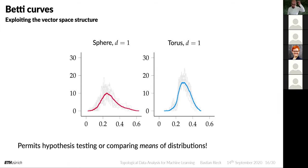You can exploit the vector space structure of Betti curves by calculating a mean Betti curve over different samples from a dataset. For example, taking 100 samples from a sphere dataset and graphing persistent homology features in dimension one calculated using the Betti curve, and similarly for a torus. You get a mean representation that becomes progressively smoother because it's an average. This makes it very easy to calculate means of distributions of features — giving rise to topological hypothesis testing.